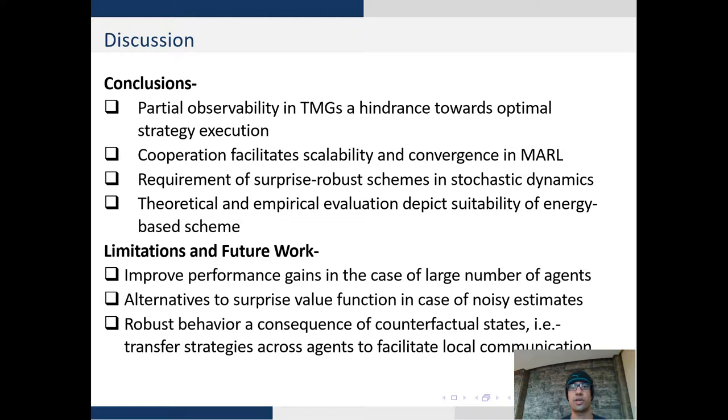To summarize, partial observability in TMGs is a hindrance and we require cooperation to facilitate improved performance. The requirement of surprise-robust schemes seems essential to tackle stochastic dynamics which may hinder state-of-the-art methods such as Q-mix to perform well. We provide theoretical and empirical evaluation of these methods showing that suitability of the energy-based scheme is appropriate in multi-agent reinforcement learning.